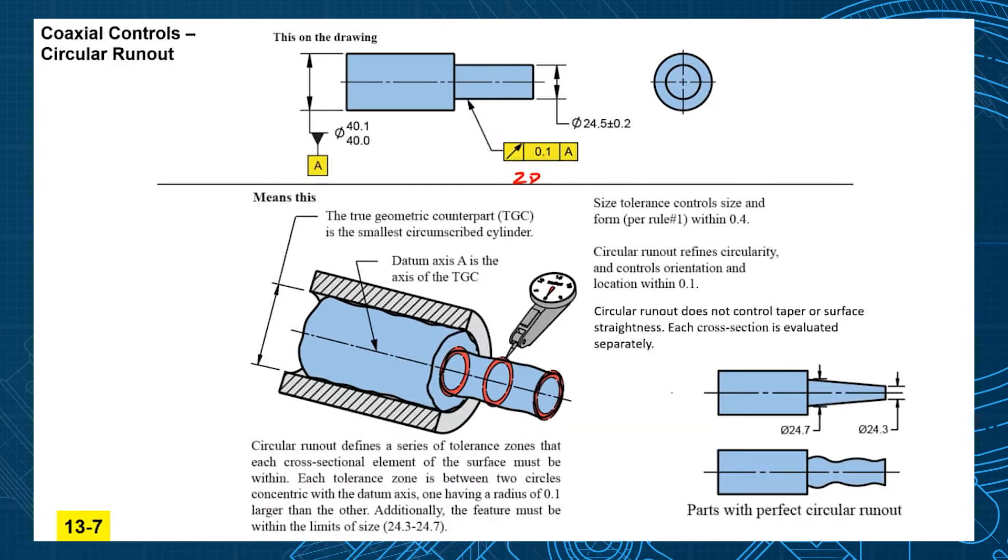What this means is our shaft could become tapered or even kind of roller coaster ride shaped here as long as the other side matches. Each one of these has perfect circular runout. Because we place our indicator at one location make sure it runs out true.